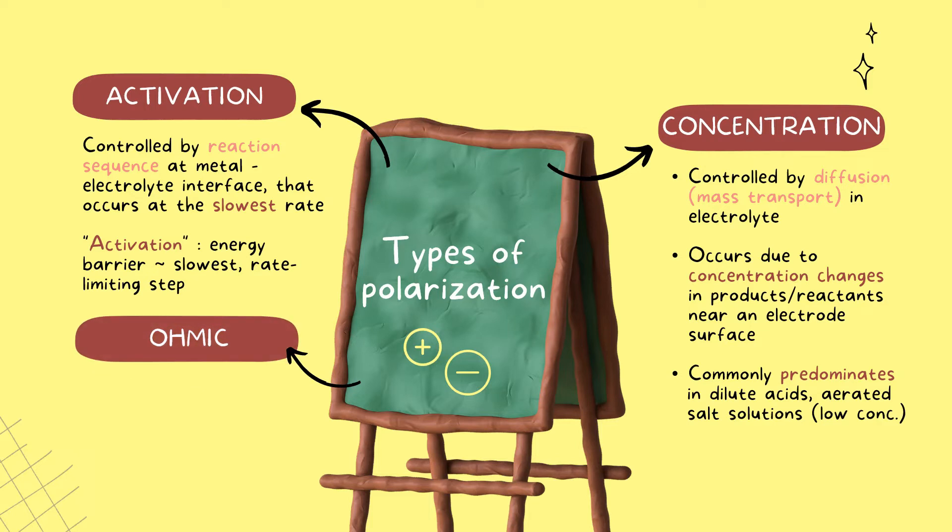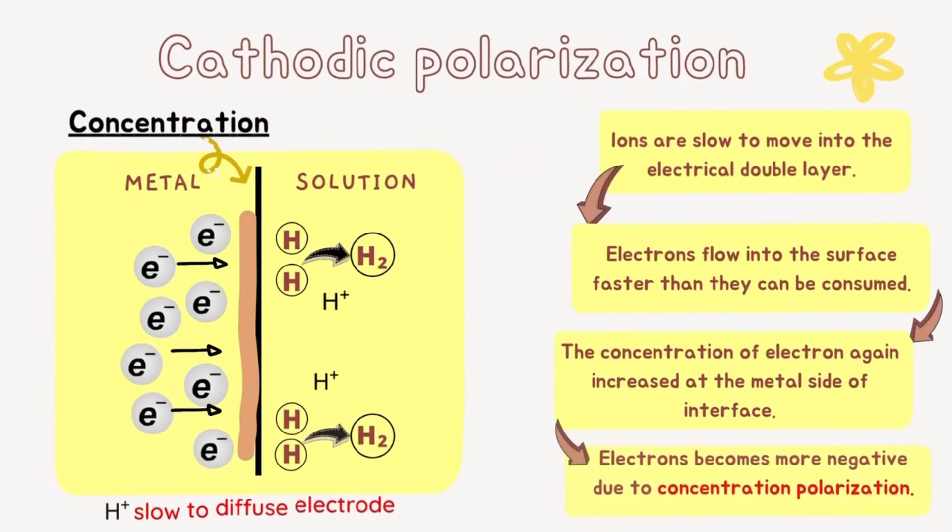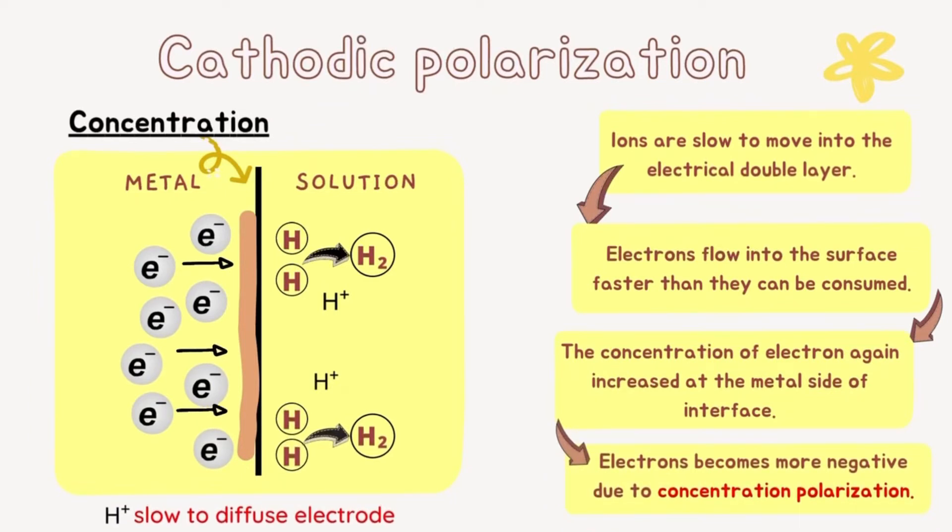For ohmic polarization, it is caused by the voltage drops due to charge transport. For cathodic polarization, ions are slow to move into the electrical double layer. Electrons flow into the surface faster than they can be consumed. The concentration of electrons increased at the metal side of interface.